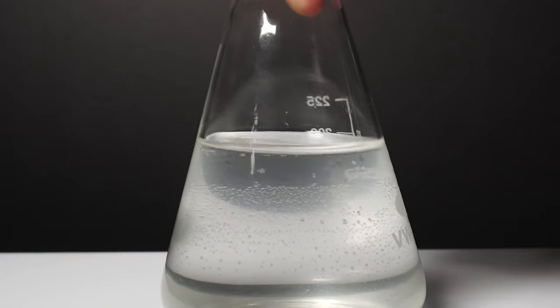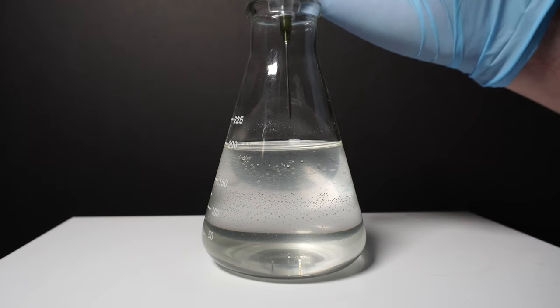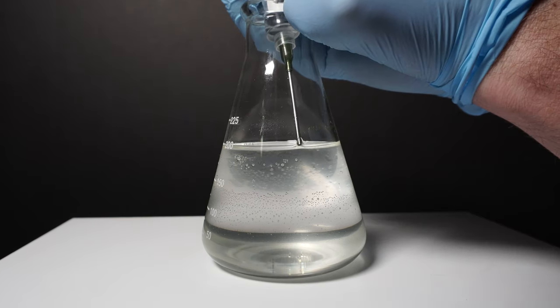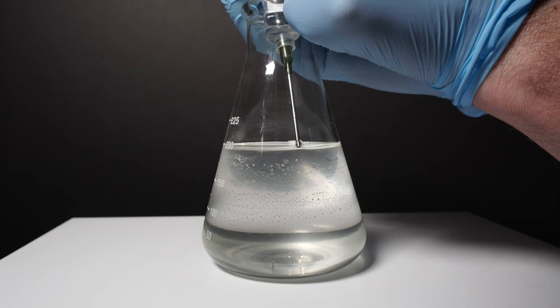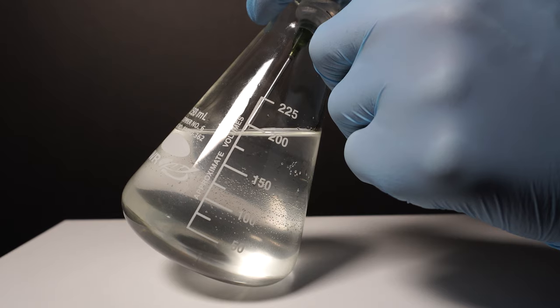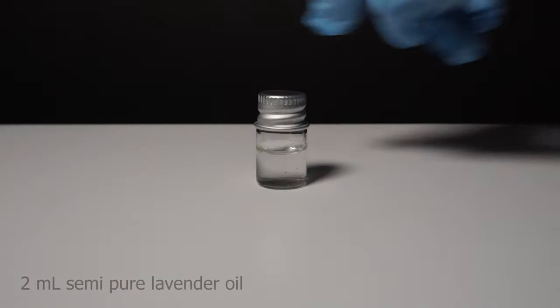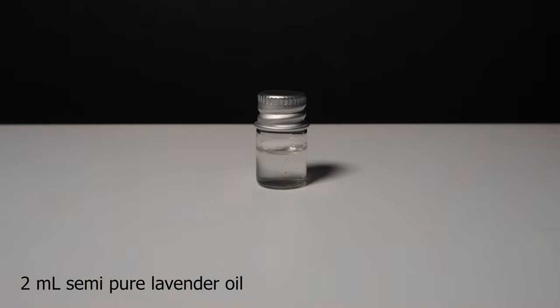We can see that a nice layer of oil has formed at the top of the flask. I could use a separatory funnel. However since there was such little oil, I decided to use a syringe to pull off the top layer. Tipping the flask to one side will sometimes let the oil build up and make it easier to syringe off. From here we can see my poor yield of just about 2 milliliters of semi pure lavender oil. Once again if I used fresh lavender my yield would have been much better.